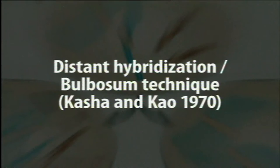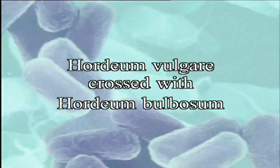Haploids are also artificially produced by two important methods. The first is distant hybridization, commonly known as the bulbosome technique, developed by Kasha and Kao in 1970. In this technique, Hordeum vulgare was crossed with Hordeum bulbosum. After zygote formation, the chromosomes of Hordeum bulbosum started eliminating one by one, and the embryo finally received chromosomes of only Hordeum vulgare. Since there was only one genome in the embryo, the plant raised became haploid. This technique was then applied to different plants like barley and maize.